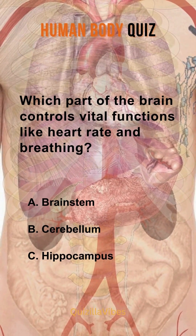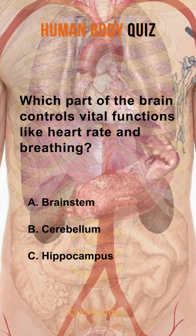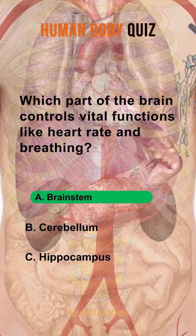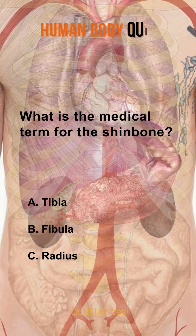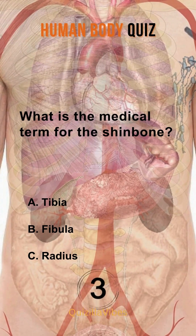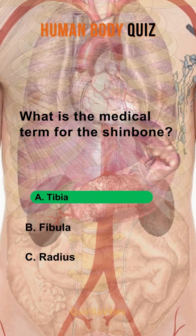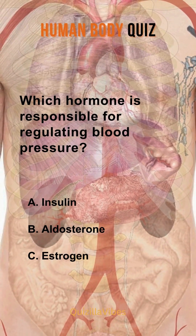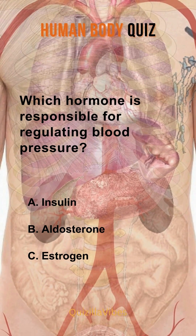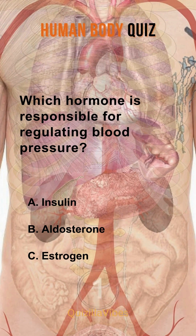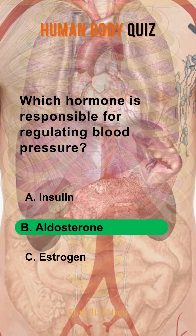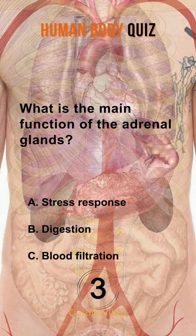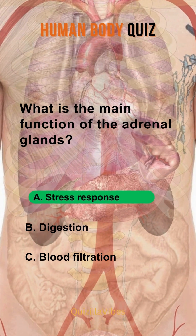Which part of the brain controls vital functions like heart rate and breathing? Brainstem. What is the medical term for the shinbone? Tibia. Which hormone is responsible for regulating blood pressure? Aldosterone. What is the main function of the adrenal glands? Stress response.